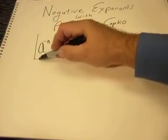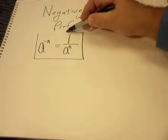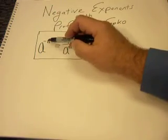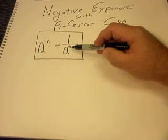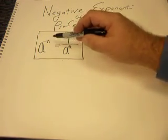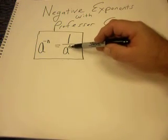So if you have a negative exponent, you take the base and you put it in the denominator, and the exponent then becomes positive. So the exponent was negative here and it's positive here.